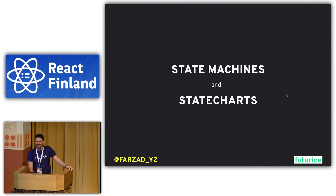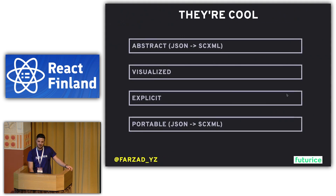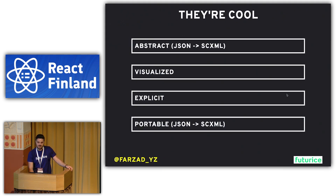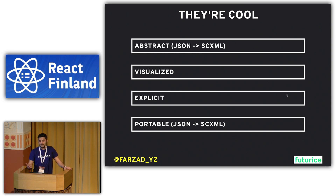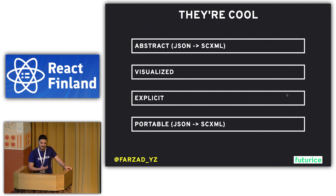Here come state machines and state charts. They're abstract — all the definition happens in a simple JSON object — which makes them portable, since JSON can be serialized and parsed by almost all languages and tech stacks. If you're working with something like Elm, you can convert everything to SCXML, which is a standard XML representation of state chart behavior. They can also be visualized, making them a common language for non-technical stakeholders who identify behavior based on business value. And they're explicit — you think about everything upfront, before touching the code.